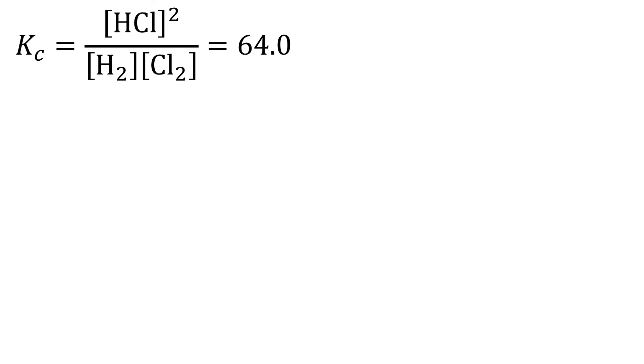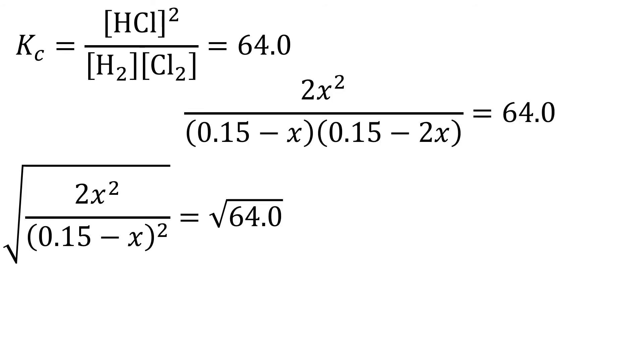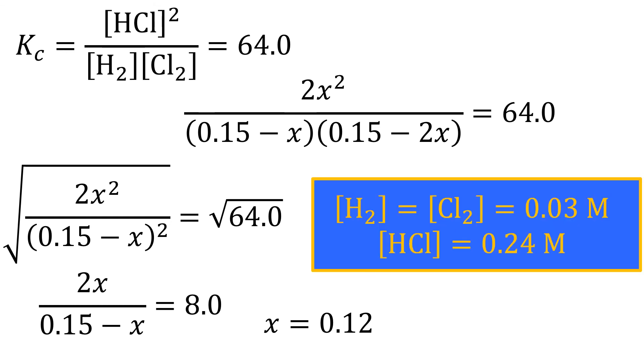Take these values and plug them into the equilibrium expression and solve for x by taking the square root of both sides because both the numerator and the denominator are squares. If they weren't, a quadratic equation may need to be solved. This then gives the value of x as 0.12, which can be plugged into our original expression to give the equilibrium concentrations of the products and the reactants.